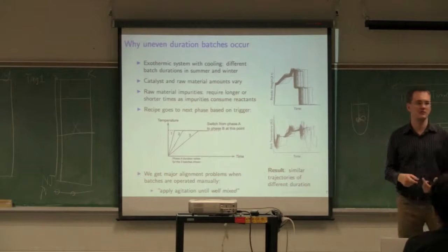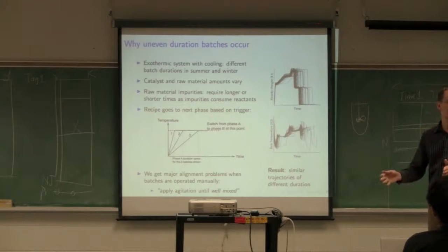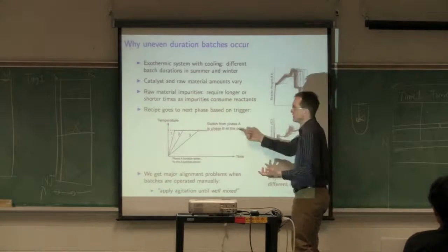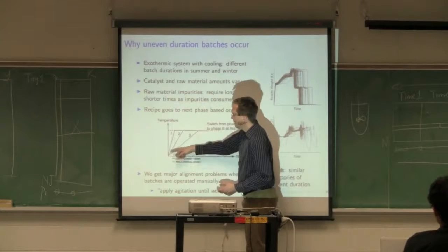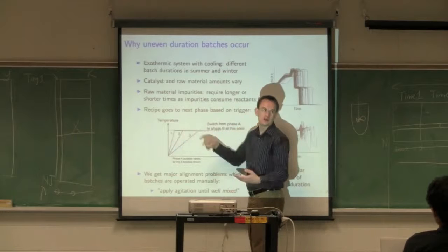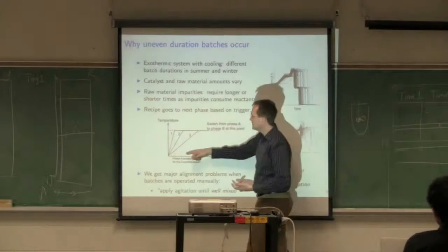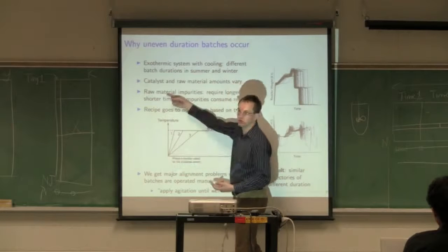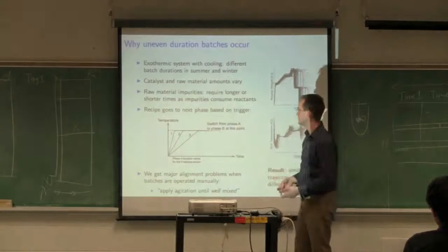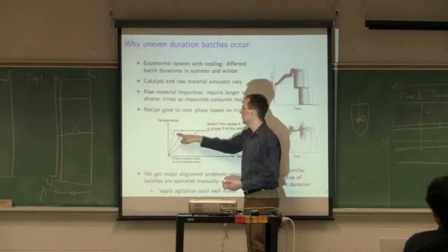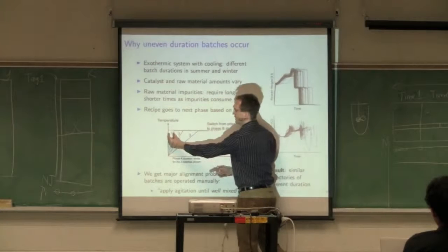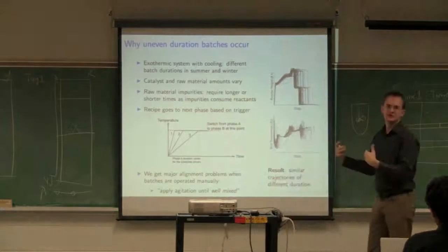To understand why we get these uneven durations, it helps to take a look. Many systems are run externally. If you drive past industrial complexes with big reactors, they're all at ambient conditions, exposed to outside air. For systems that are heated and cooled, they have different heating and cooling rates from summer to winter. They may put less energy in during summer or take less energy out during winter, resulting in unequal batch durations.